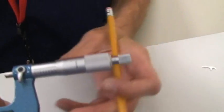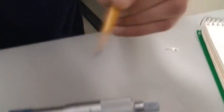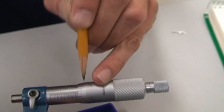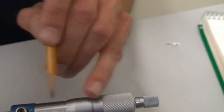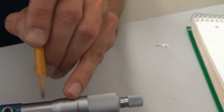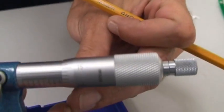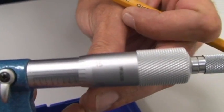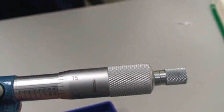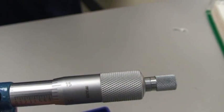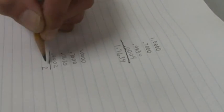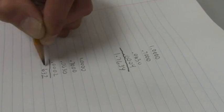And last but not least, which line on the thimble corresponds with my ten-thousandth number? And it looks to be, in this case, two. See that? Okay. So that's .0002. So that is 2, 3, 6, 7, 1. All right.